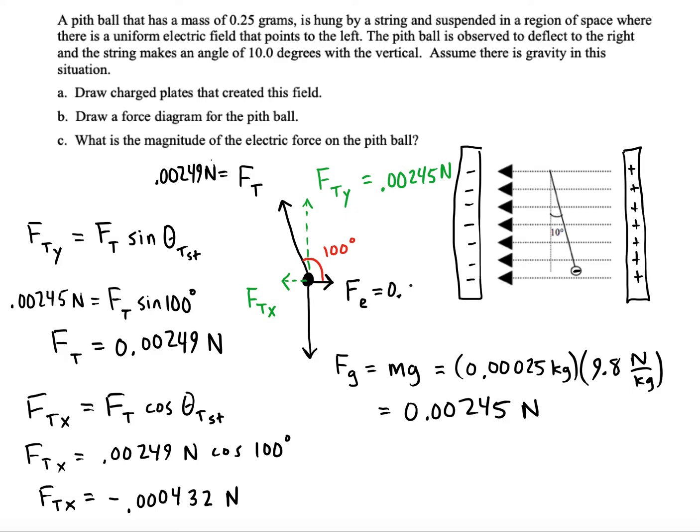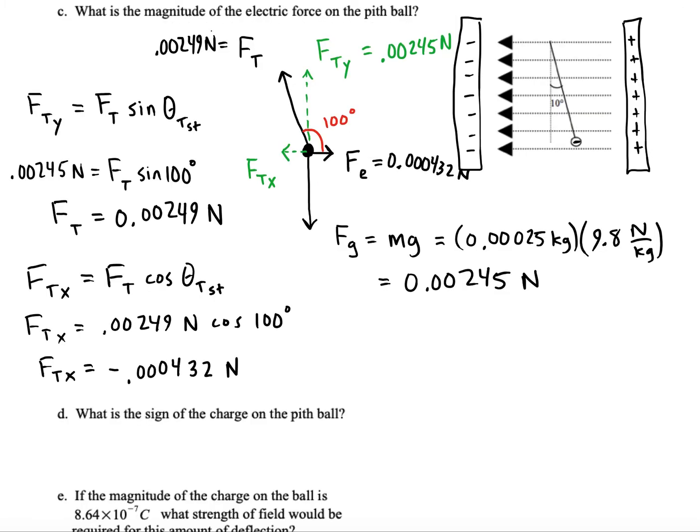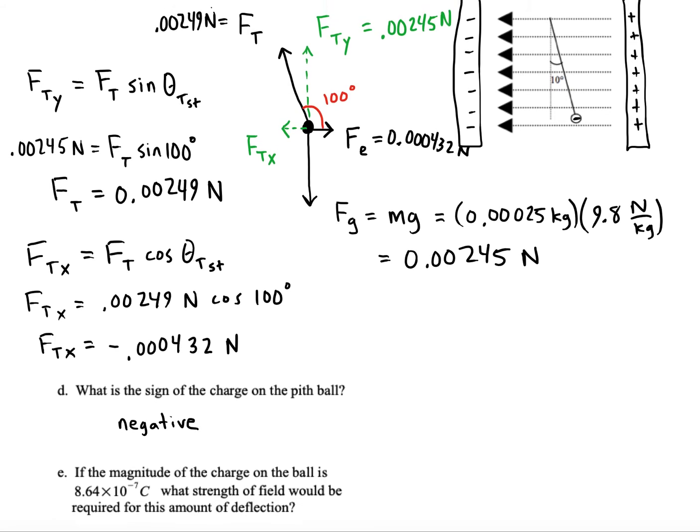This tells us that the electric force must also be positive 0.000432 newtons. Next we're asked what is the sign of the charge on the pith ball. We had already said it was negative.